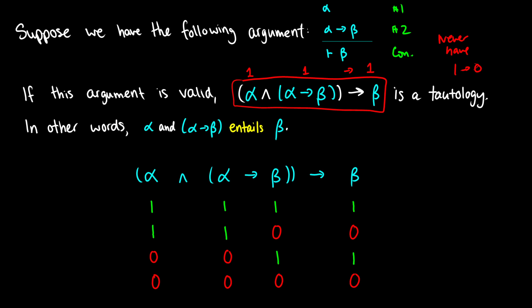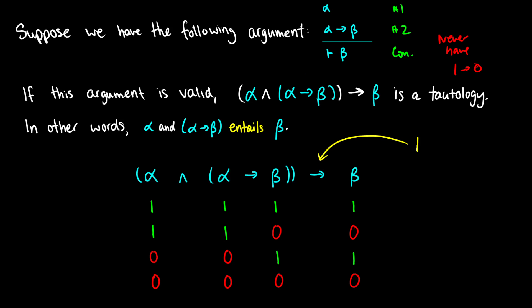Another way of saying this is that alpha and alpha arrow beta entails beta. We need to check with our truth table to see if this is a valid argument. We need to show that this argument is a tautology, so the column under our main connective — the conditional — should be all ones.